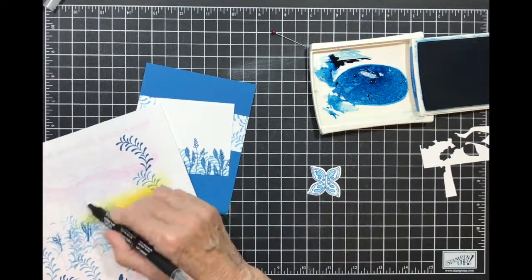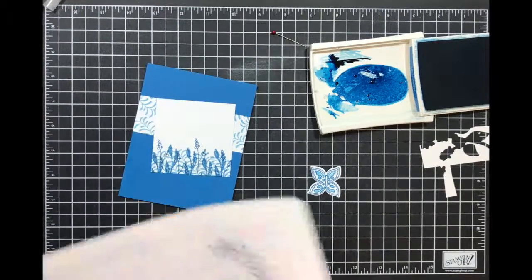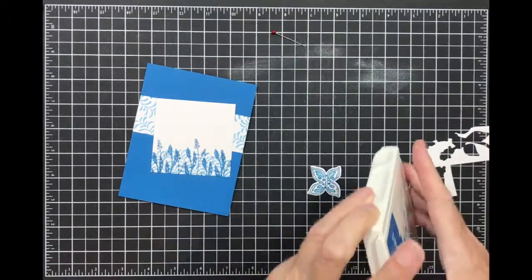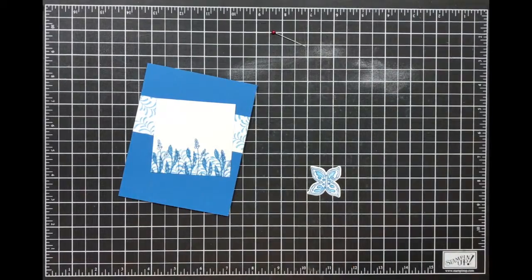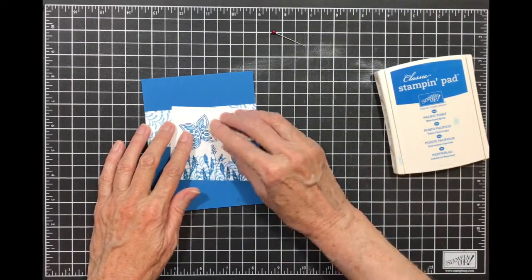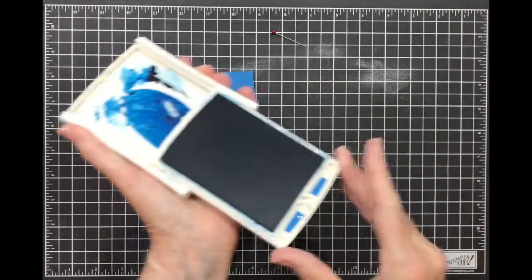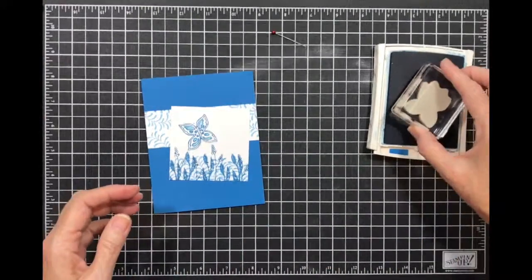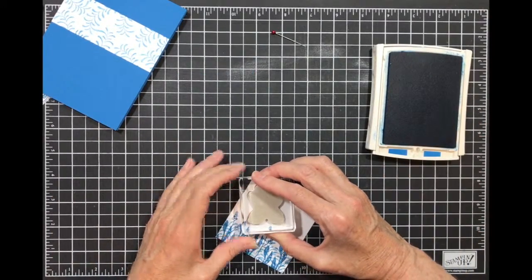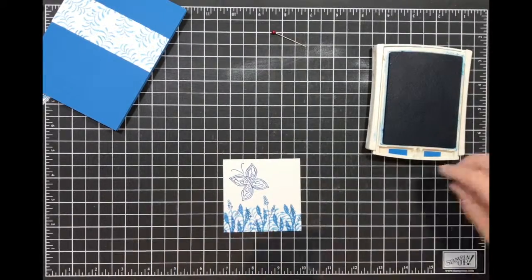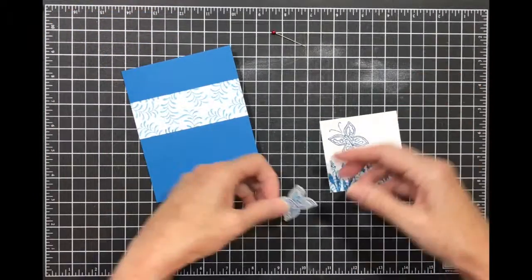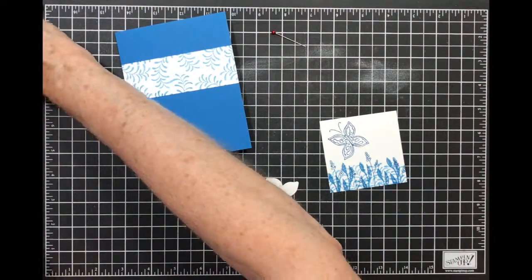Don't forget to clean your blender pen so that you don't have any ink left in it. I think I have this. I'm going to put this up here, but it has no antenna because you punch them off. So what I'm going to do is I'm going to stamp it again so that the antenna are there. I will add this little butterfly with dimensionals.